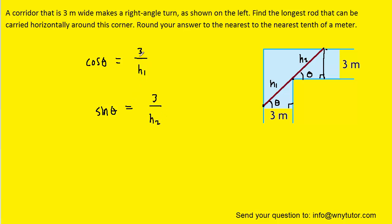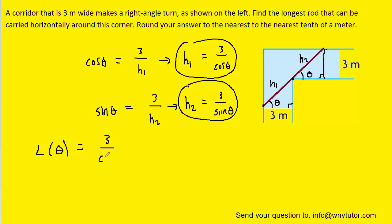Now, both of these equations can be solved for their respective hypotenuses. And so here are those equations solved for the hypotenuses. We note that the total length of the rod would simply be the sum of those two hypotenuses. So we can say that the length as a function of the angle would equal h1, which was the 3 over cosine theta, plus h2, which is 3 over sine theta.